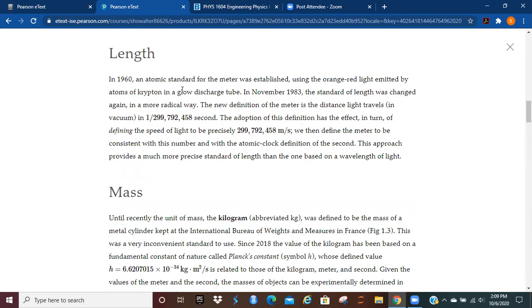In terms of length, in 1960, the atomic standard for the meter was established using the orange-red light emitted by atoms of krypton in a glow discharge tube. However, in November of 1983, it was changed, and the new definition is the distance that light travels in a vacuum in a fraction of a second, this fraction in particular. If you take that and re-invert it, then you find that you've got the speed of light defined in terms of meters per second.